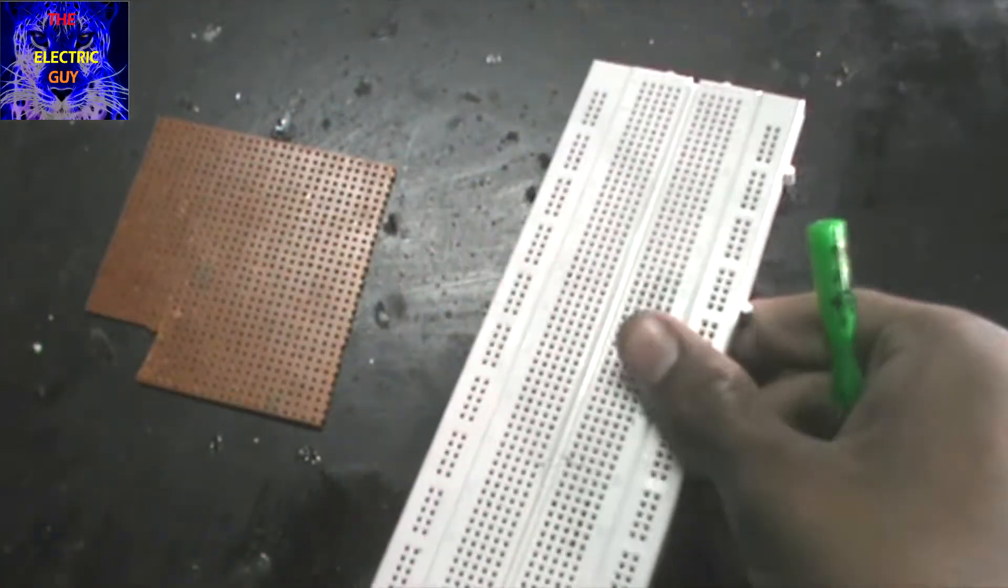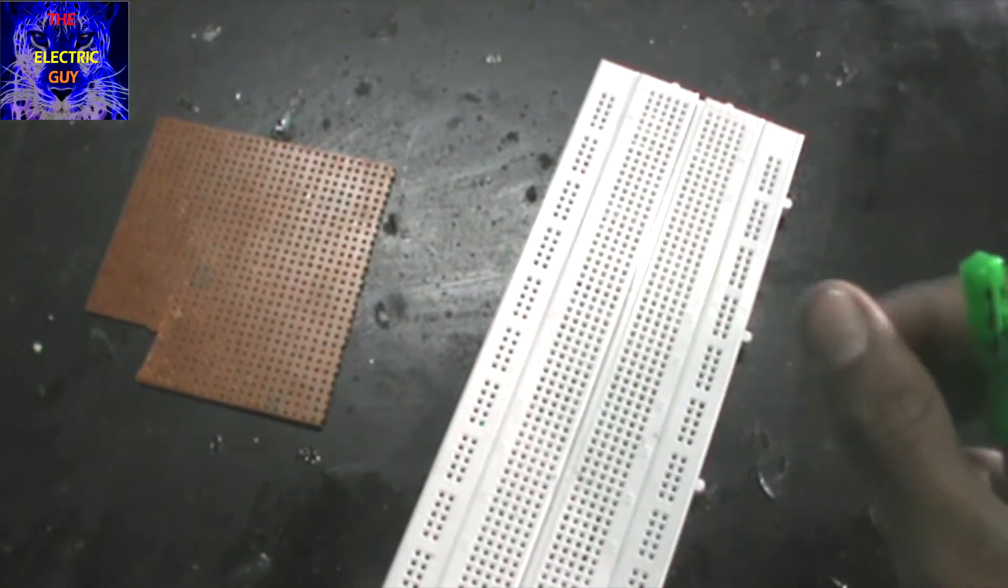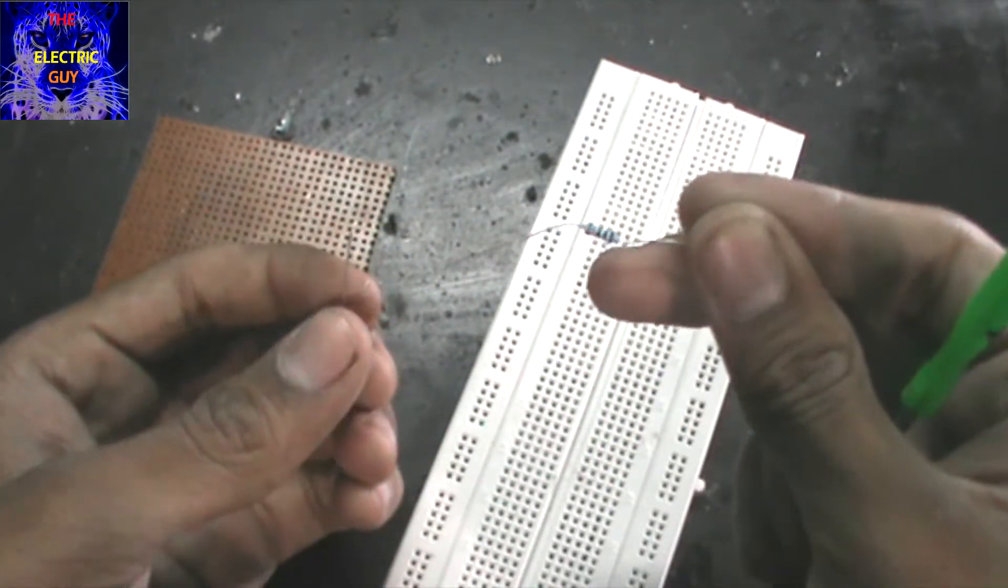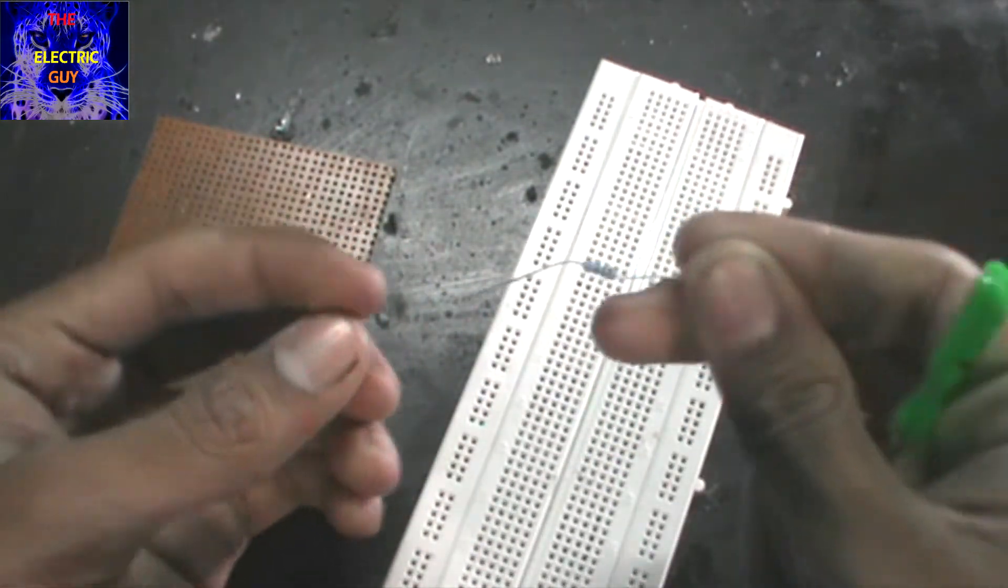If I have to connect a capacitor with a resistor, how would I be able to connect? Let's see.